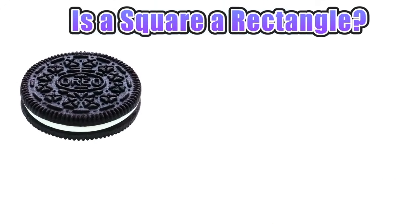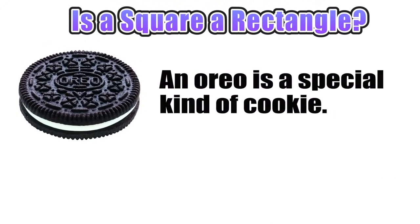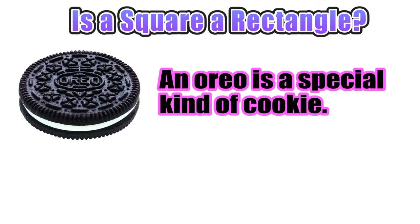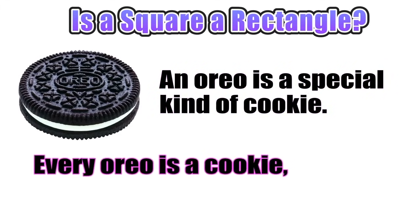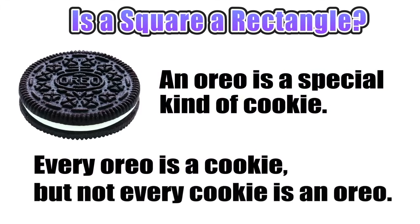We can conclude that an Oreo is a special kind of cookie, and that every Oreo is a cookie — but not every cookie is an Oreo. Believe it or not, we just engaged in mathematical reasoning, and now we're going to take that same kind of thinking and apply it to our original question.